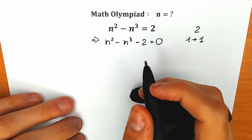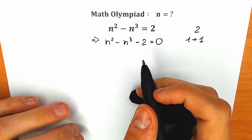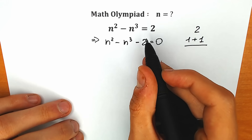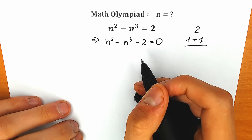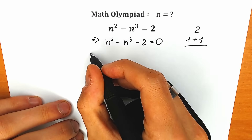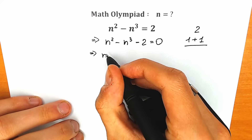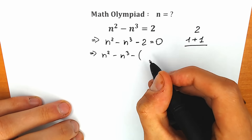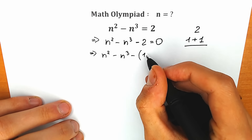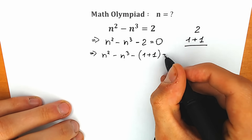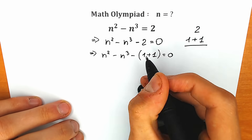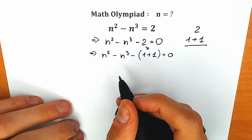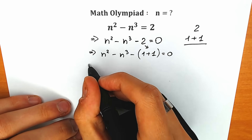In a few seconds I will explain why we changed this 2 by 1 plus 1. So instead of 2 we are going to write 1 plus 1. As a result we have n-squared minus n-cubed minus, and in parentheses we have 1 plus 1. This is our expression instead of 2. Right now let's open our parenthesis.